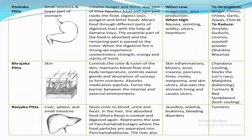Third is Pachak Pitta, located in the small intestine and lower part of the stomach. Its actions include creating hunger and thirst, liquifying food, cooking and digesting food, separating nutrients, digesting sour and bitter foods, and moving food through different parts of the digestive tract with the help of Samana Vayu. The essential part of food is absorbed and the remaining part is passed on. When digestive fire is strong, we experience contentment, strength, energy, and clarity of mind.